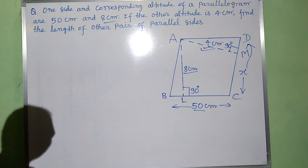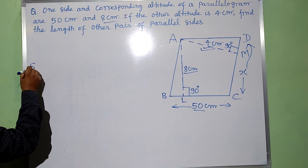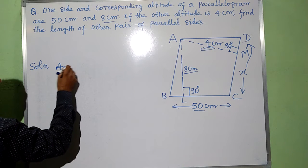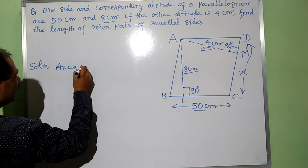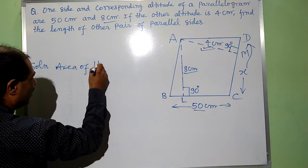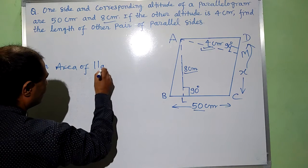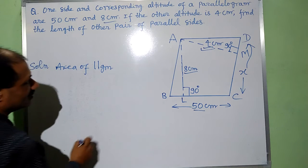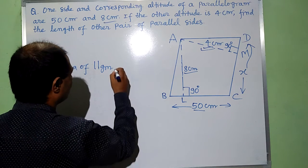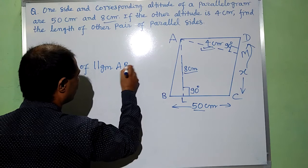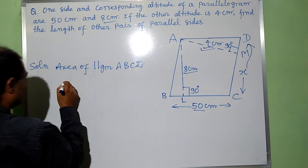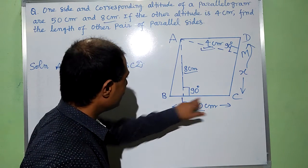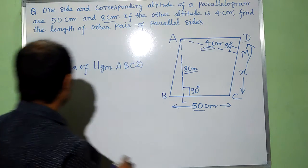As we know, area of a parallelogram, area of parallelogram ABCD is equal to, when we take base, this is BC, 50 cm.